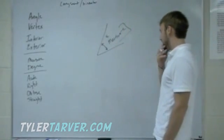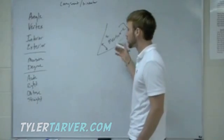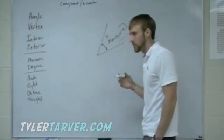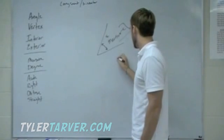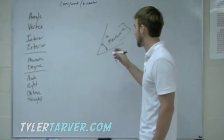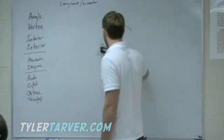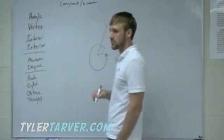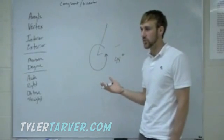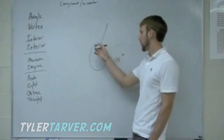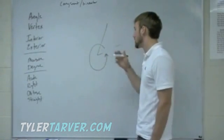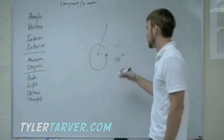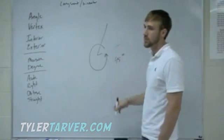We measure angles in degrees. A degree — most of the time you think of that with temperature, like 45 degrees. That's the degree symbol, and that's how open or wide the angle is. All the way around would be 360 degrees — that makes a circle. So every degree is one out of that 360.